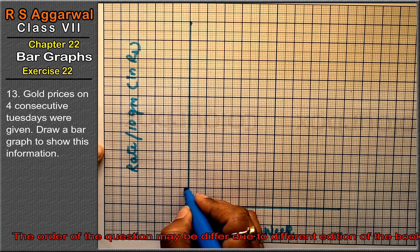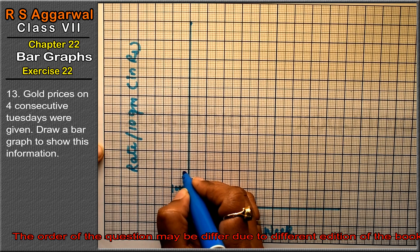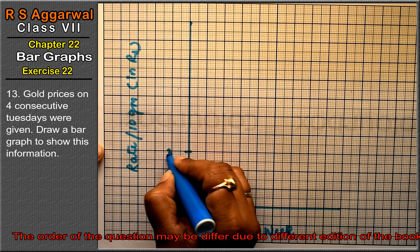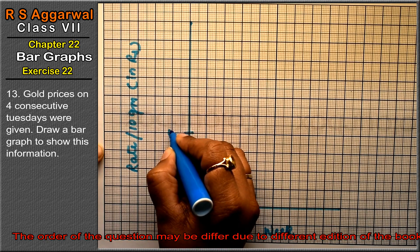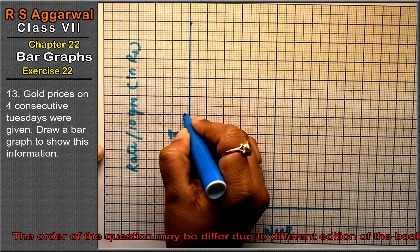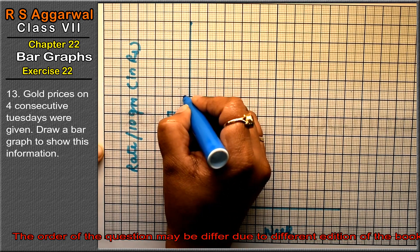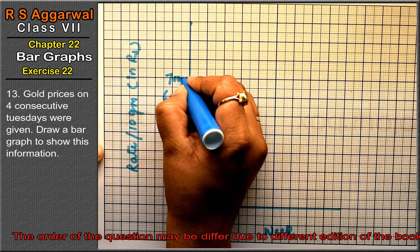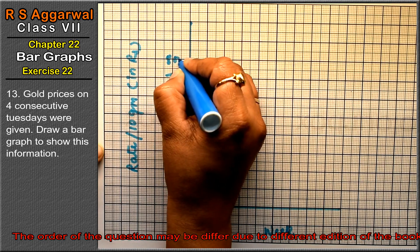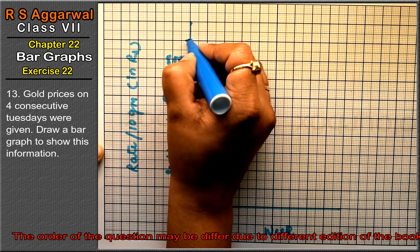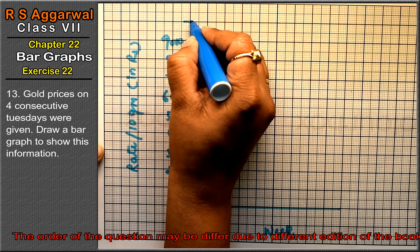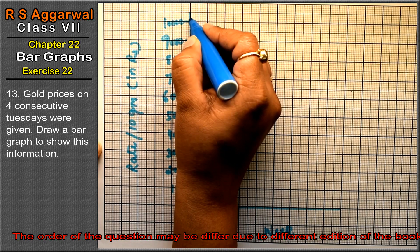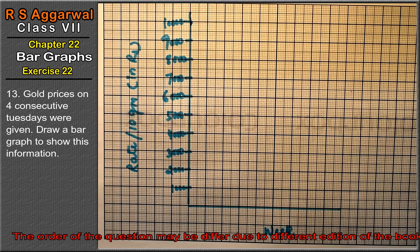So marking the scale: 1,000, 2,000, 3,000, 4,000, 5,000, 6,000, 7,000, 8,000, 9,000 and 10,000. Right friends, first is 85.